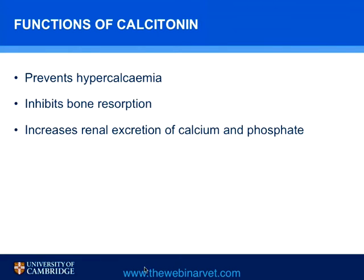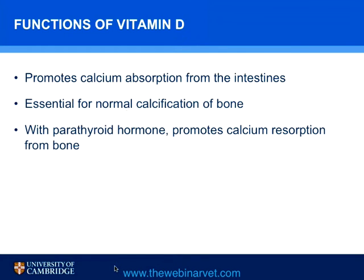Calcitonin, which is produced in the C cells of the thyroid gland, is often referred to as an emergency hormone. It is designed to prevent hypercalcemia and is only elaborated when calcium levels are going above the reference range. It inhibits bone resorption and increases renal excretion of both calcium and phosphate. In the normal animal, you cannot measure calcitonin — it is only present in times of emergency.